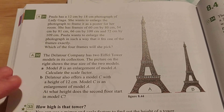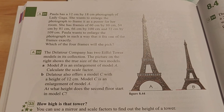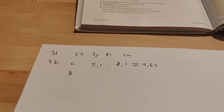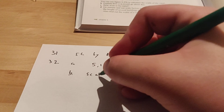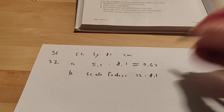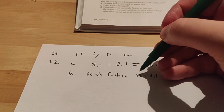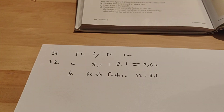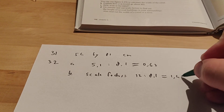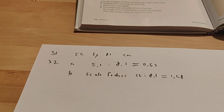We already measured model A as 8.1 centimeters. Model C is 12 centimeters tall, so the scale factor is 12 divided by 8.1 — that's the length in the enlargement divided by the length in the original — which gives 1.48 rounded to two decimal places.